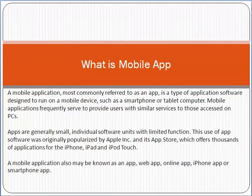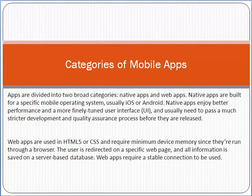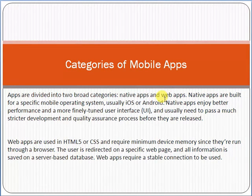There are mainly two types of categories of mobile apps. The first is the native app and the second is the web app. A native app is one which runs on the operating system of the phone, like Android or iOS. It is installed and runs through your operating system, which is why it is called a native app.